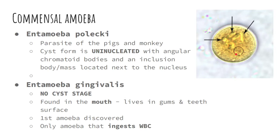Please take note that Entamoeba gingivalis has no cyst stage — it exists only in trophozoite form. Gingivalis can be found in the mouth, living in the gums and teeth surfaces. It is the first amoeba to be discovered and the only amoeba that ingests WBCs — white blood cells — unlike E. histolytica which ingests RBCs.